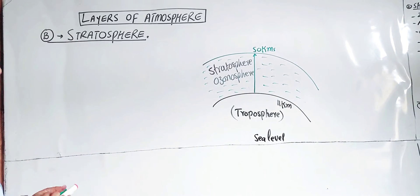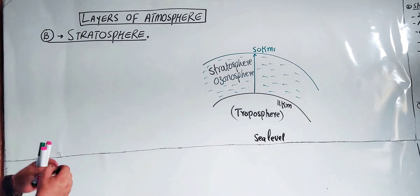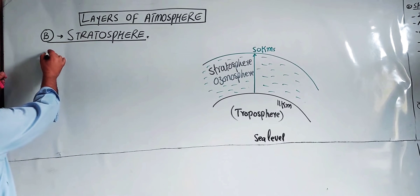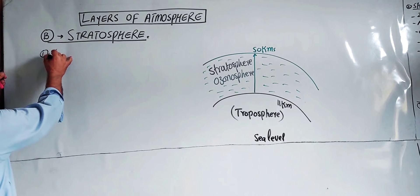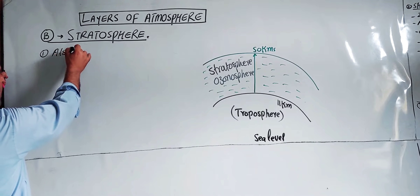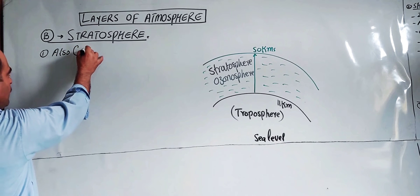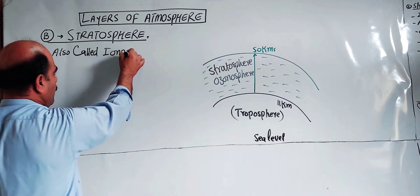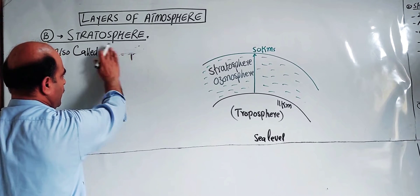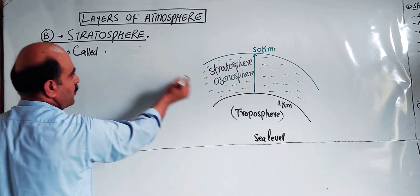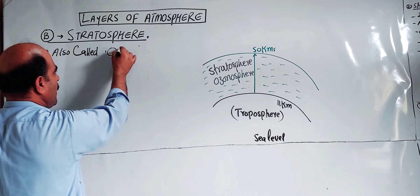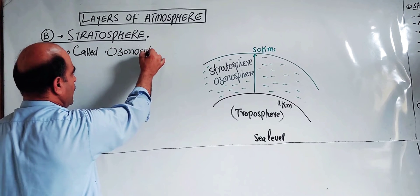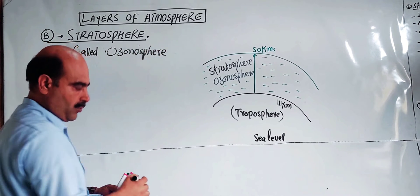Point number one: stratosphere is also called ozonosphere. It is also called ozonosphere. The reason is that the ozone is also present in this layer.